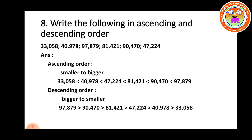Next smaller is 4, but we have two numbers starting with 4: 40,978 and 47,224. Look at the second digit from the left: 0 and 7. 0 is smaller, so next is 40,978. Then obviously 47,224. Remaining numbers have first digits 8 and 9. 8 is smaller, so 81,421 is next. For the remaining two starting with 9, compare second digits: 0 and 7. 0 is smaller, so next is 90,470, and last is 97,879.